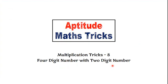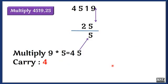We already discussed the shortcut trick to multiply a 3 digit number with a 2 digit number. Now we are going to move forward to multiply any 4 digit number with a 2 digit number. Let's take an example: 4519 into 25.